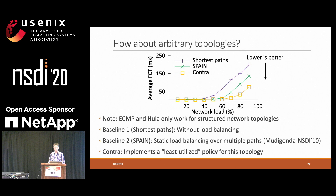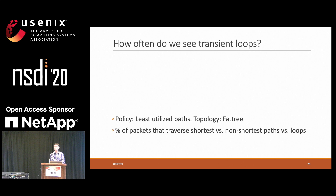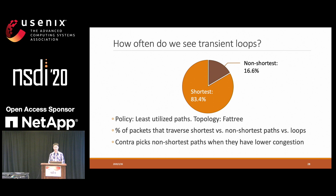Another important question is how effectively Contra can mitigate loops. We tried a least-utilized path policy over a Fat-tree topology and measured the percentage of packets traversing shortest paths, non-shortest paths, and loops. Most packets use shortest paths, and some use non-shortest paths — which is expected because the policy prefers paths with lower congestion even when longer. Transient loops do exist but are very rare, showing that Contra can mitigate loops effectively. The loops are transient, so packets will not be caught permanently.